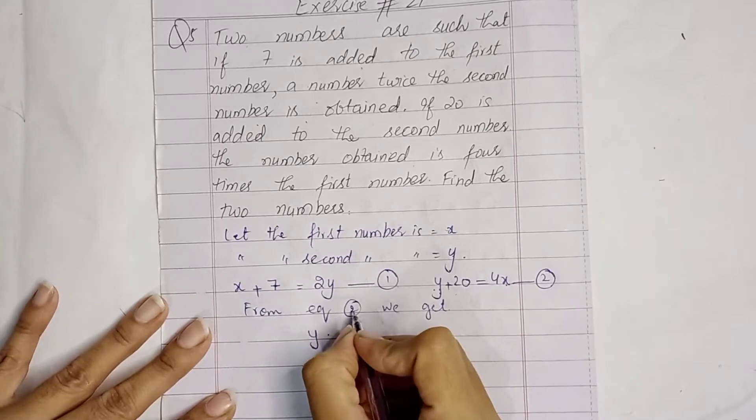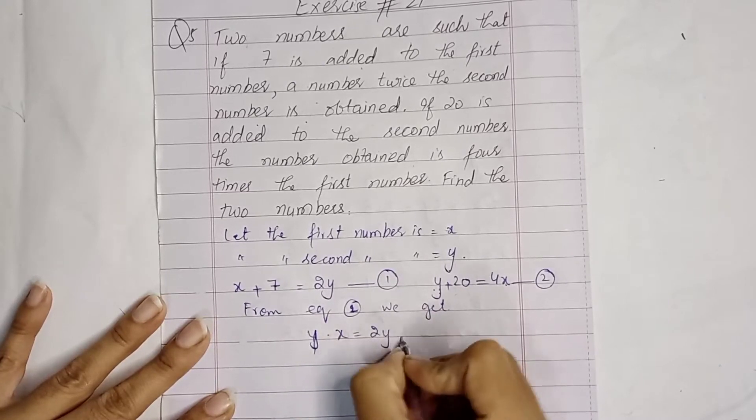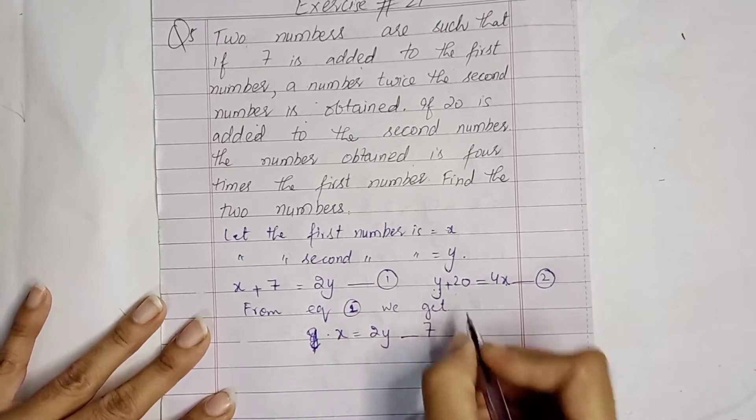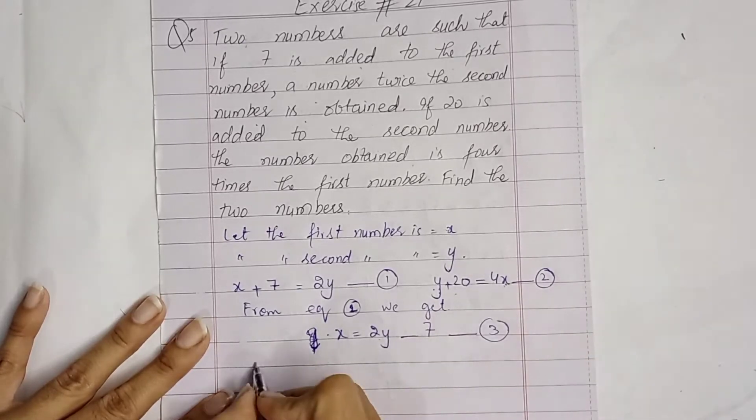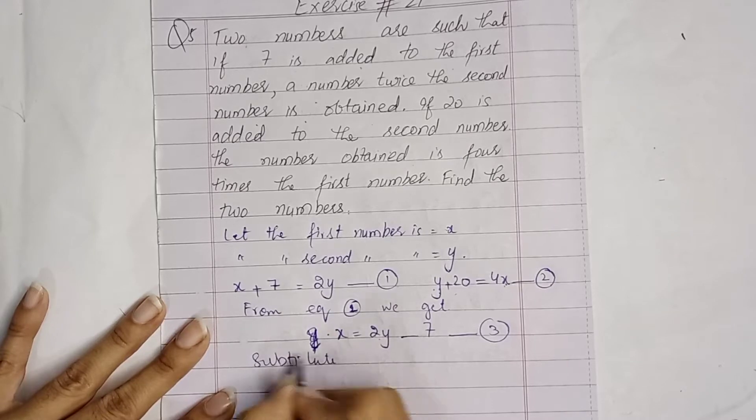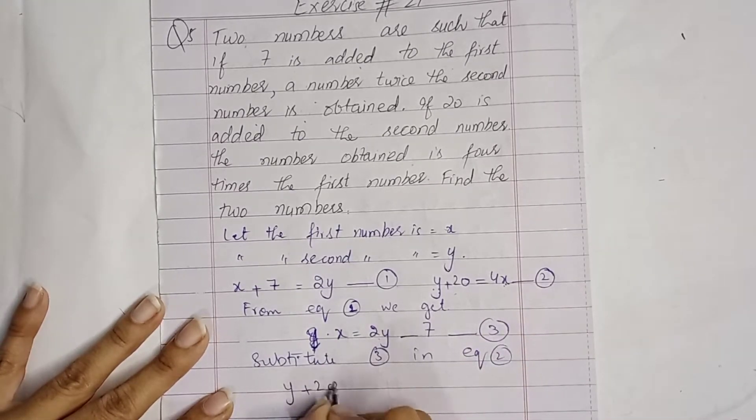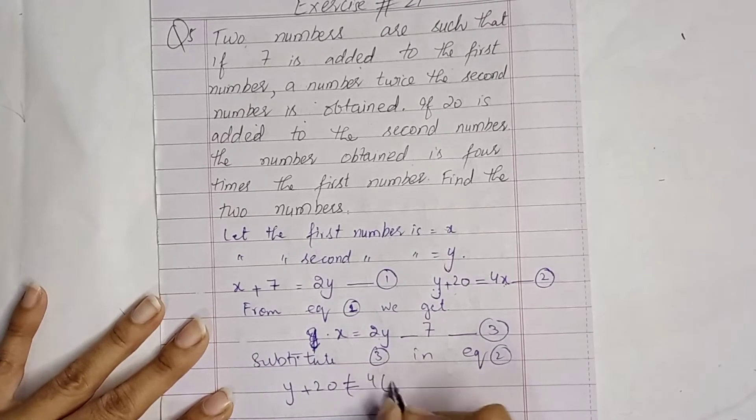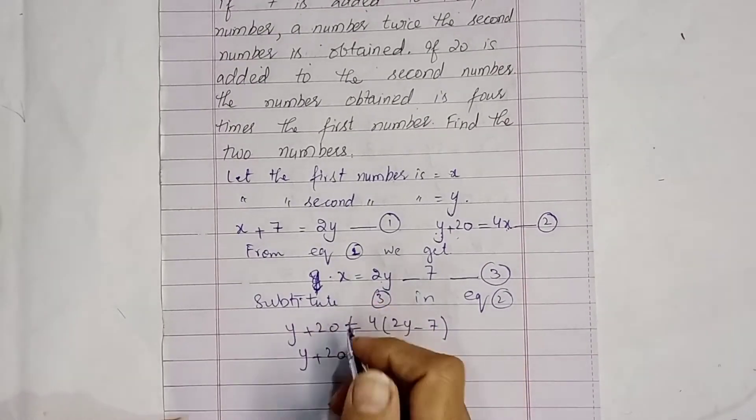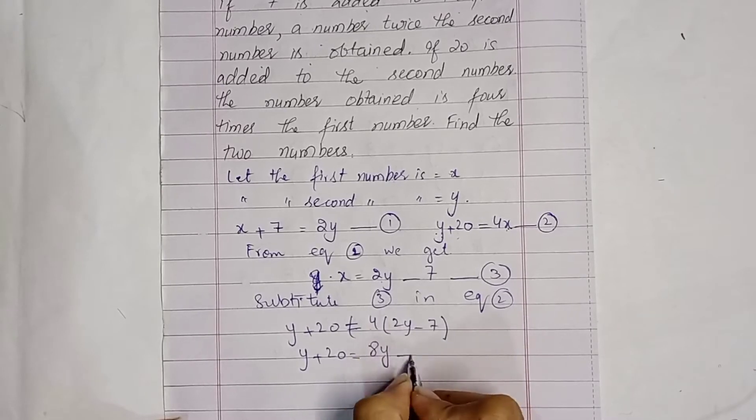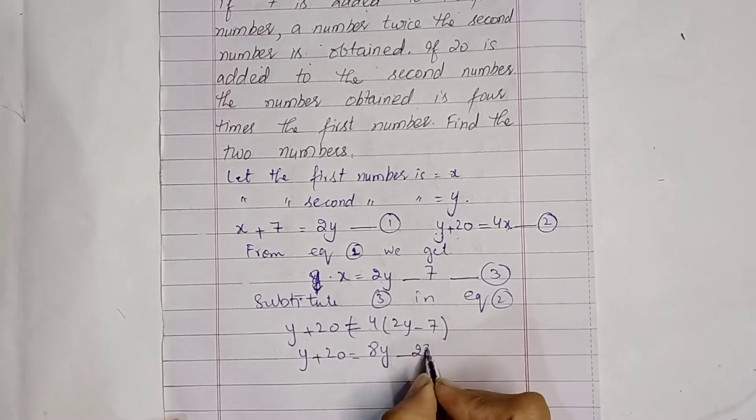Substitute y in equation 2. In equation 2, y plus 20 is equal to 4 times 2y minus 7. y plus 20 is equal to 8y minus 28.